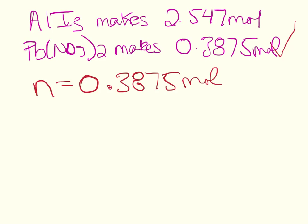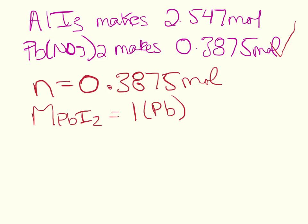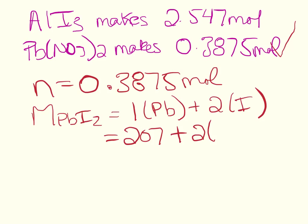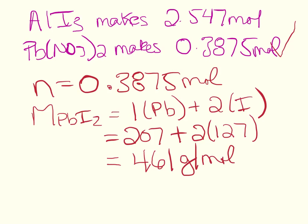Now we have to figure out the molar mass of lead iodide. Lead iodide has one lead and two iodides. One lead is 207 g/mol, and two iodides at 127 g/mol each gives 254 g/mol. So the molar mass of lead(II) iodide is 461 g/mol.